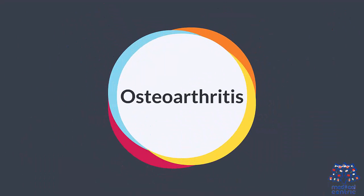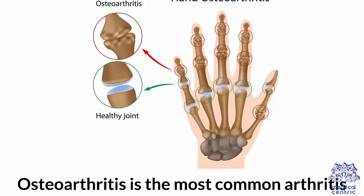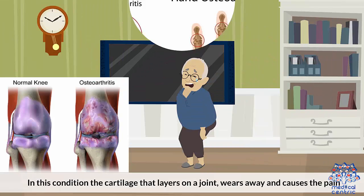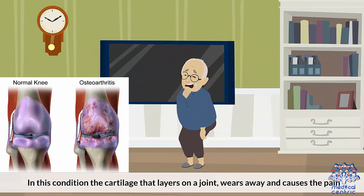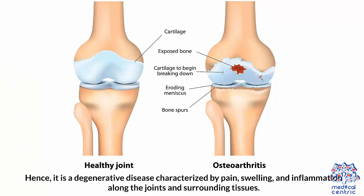Osteoarthritis is the most common arthritis. In this condition, the cartilage that layers on a joint wears away and causes pain. Hence, it is a degenerative disease characterized by pain, swelling, and inflammation along the joints and surrounding tissues.